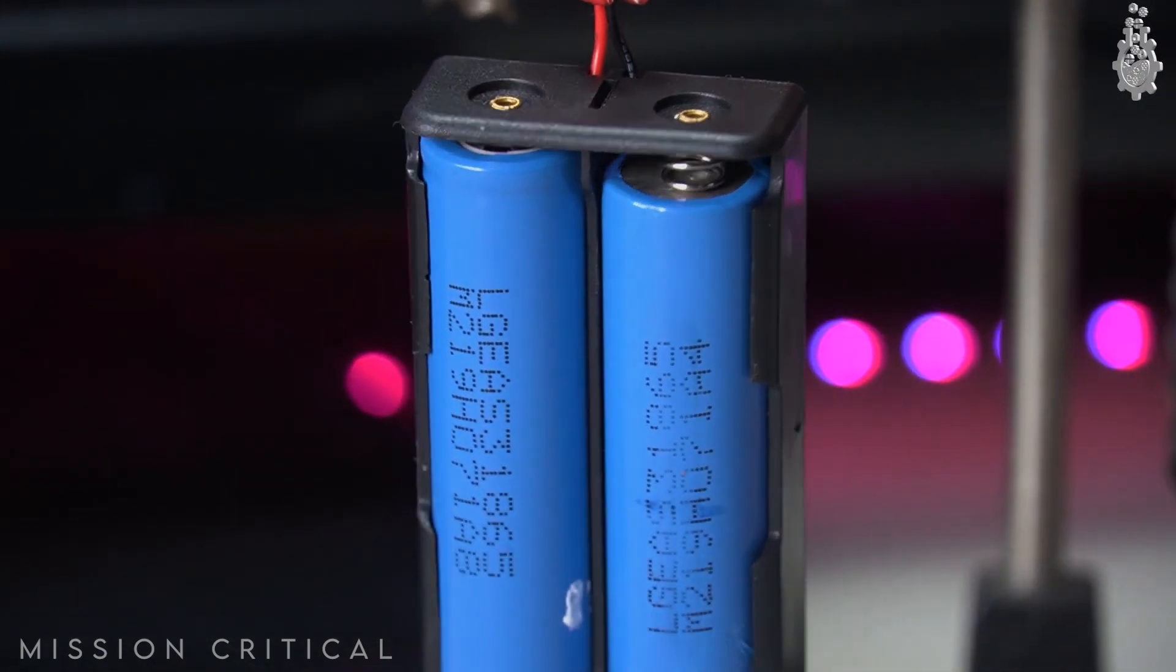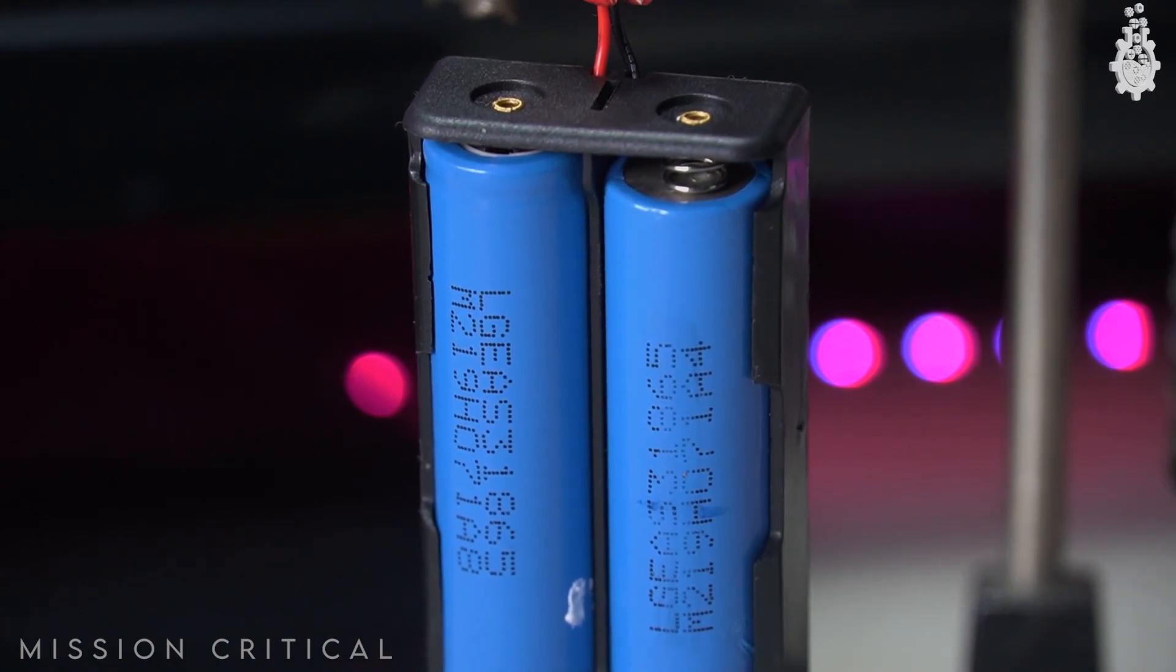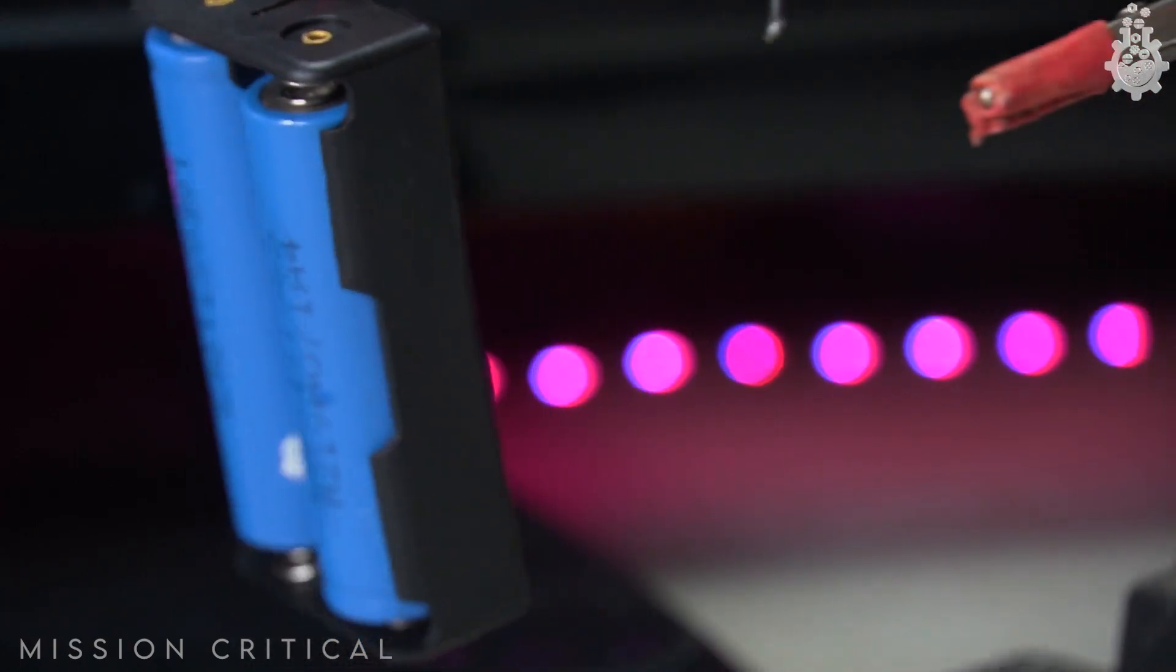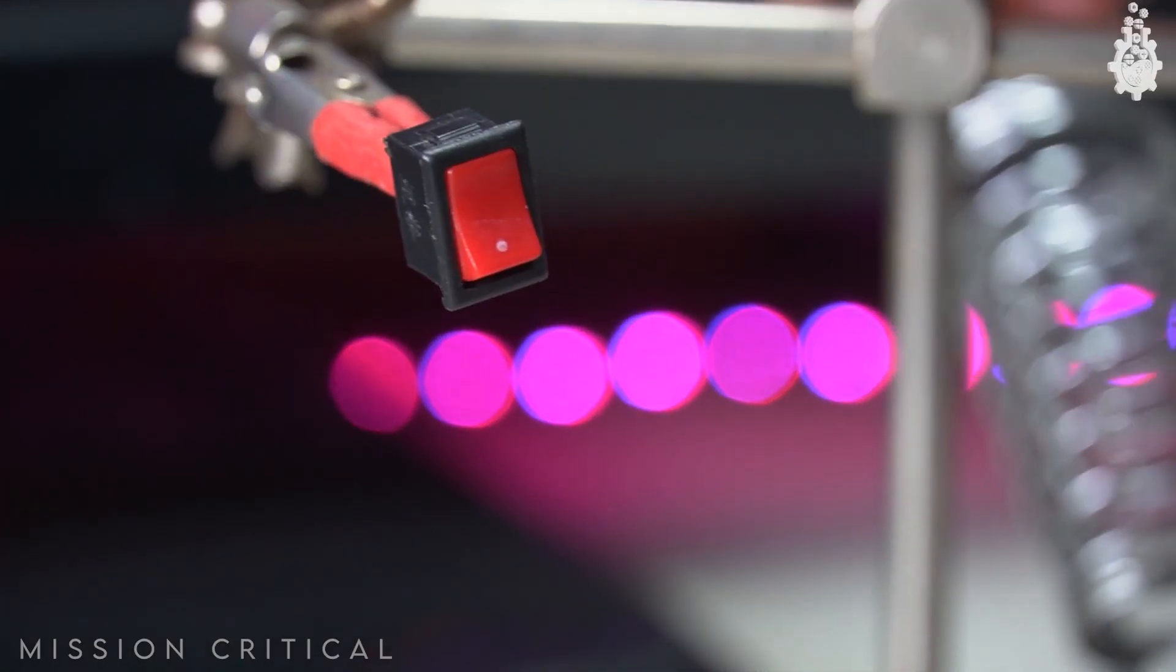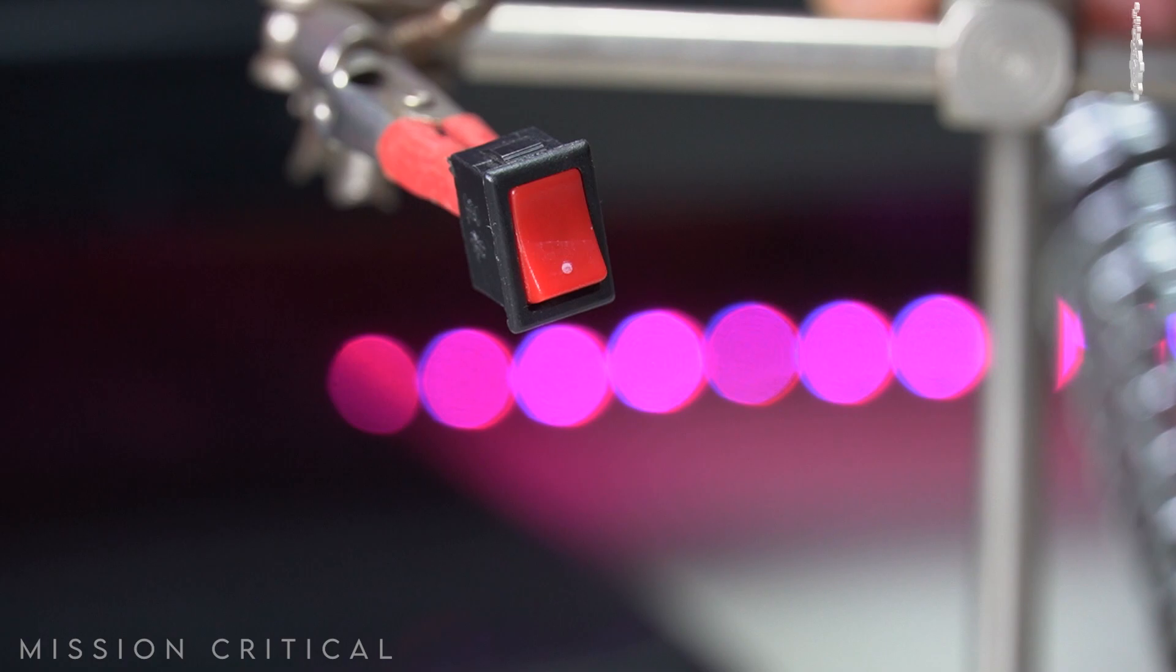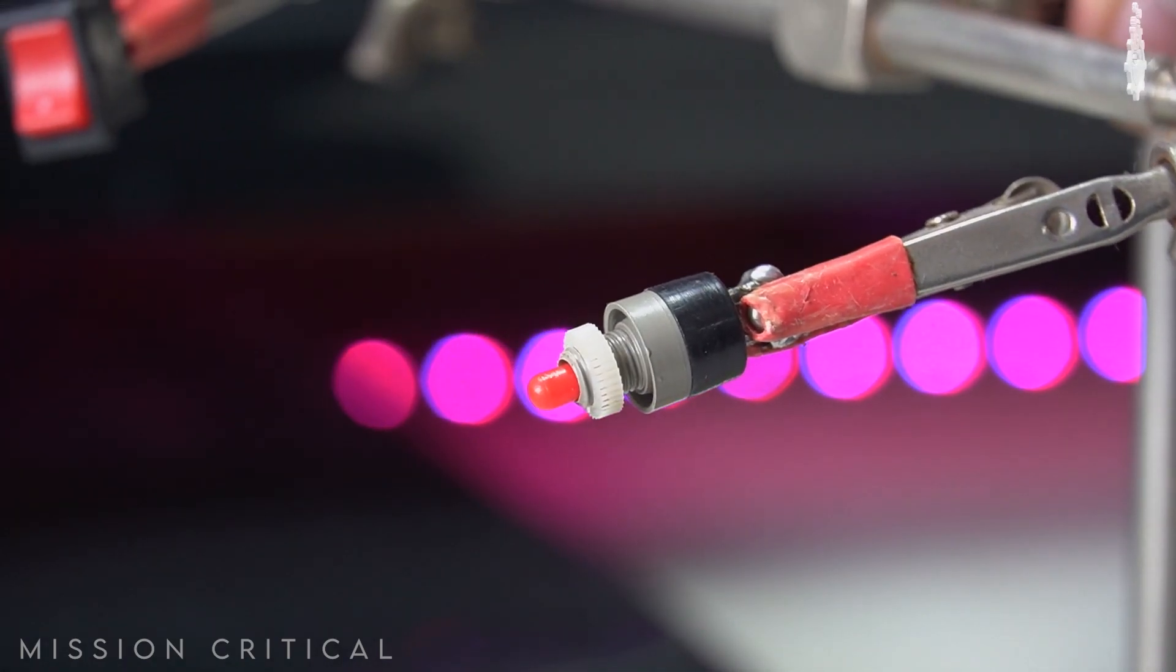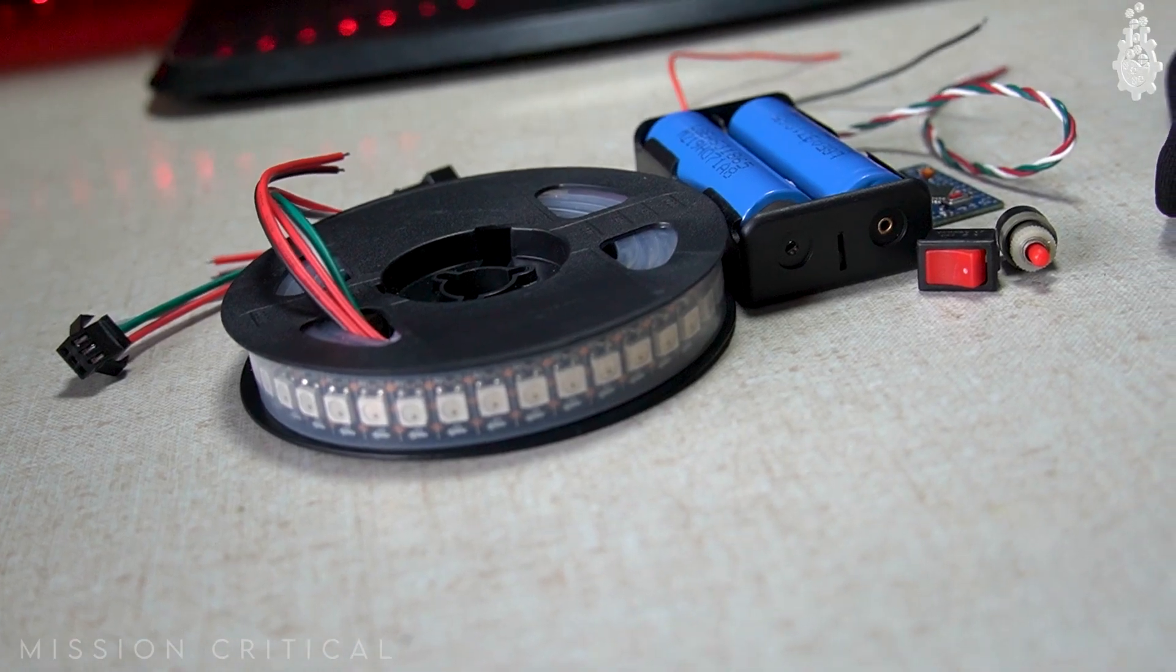Next we need a power source to power these LEDs for which I will use two lithium ion 18650 cells and use a two cell holder for it. We will also need two switches, one on off switch to turn the LED on or off and another one is a push button to switch the pattern.